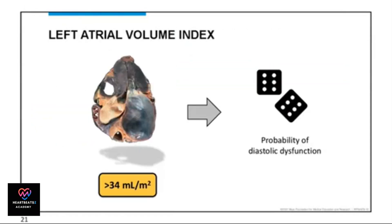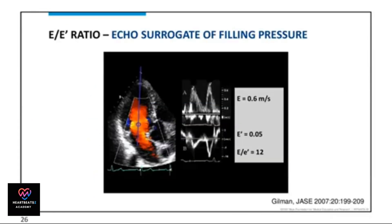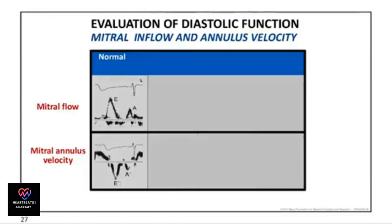The left atrial volume index is a key indicator of diastolic dysfunction. The E/E' ratio is an important surrogate for filling pressure in diastolic function evaluation.